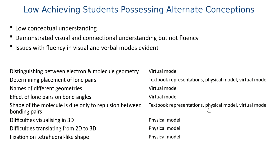Basically this is a quick summary of all the different things that helped lower-achieving students who had alternate conceptions. Students that had problems distinguishing between electron geometry and molecular geometry found the virtual model very helpful. Lots of things helped with determining the placement of lone pairs in interviews. The names of geometries and the effects of lone pairs on bond angles were strongly influenced by the virtual model. The difficulties in visualizing 3D and translating between 2D and 3D representations were also assisted by the tactile physical model. So there's a role for all these different types of representations.